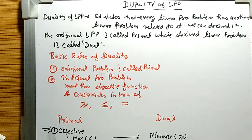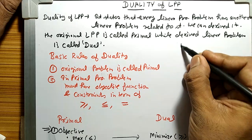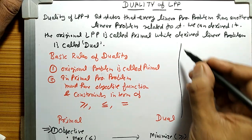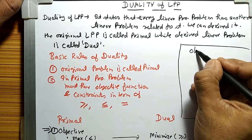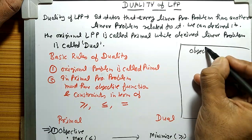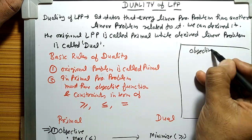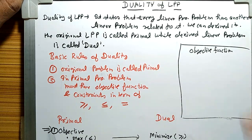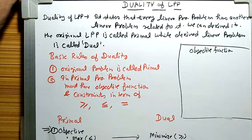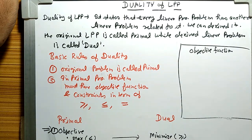In the linear programming problem there are three parts. The first part is the objective function, which is the goal — that is, the objective, the cost, or the profit.